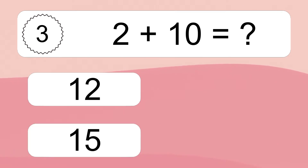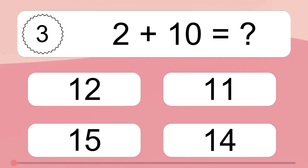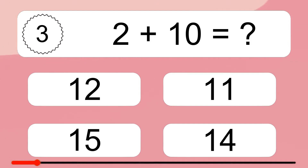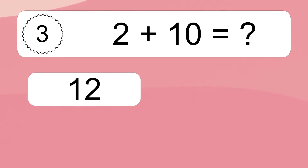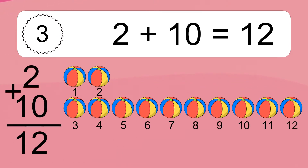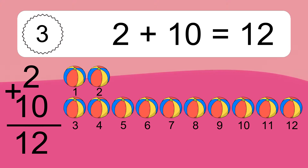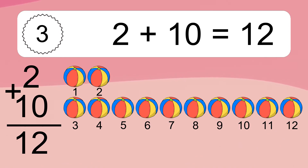2 plus 10 equals what? 2 plus 10 equals 12. Let's count it! 1, 2, 3, 4, 5, 6, 7, 8, 9, 10, 11, 12.